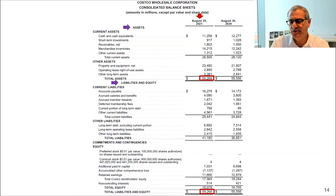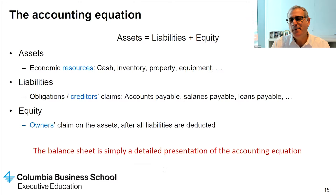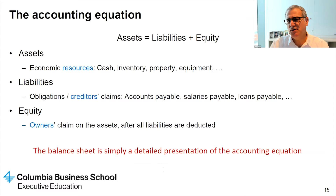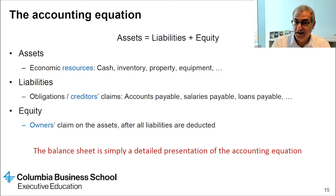Importantly, the balance sheet provides information as of a point in time — in this case for Costco, August 29, 2021. The balance sheet presents the accounting equation: assets on one side, and the claims on the assets — liabilities and equity — on the other side. Equity represents what is left after we subtract all the liabilities from the assets; that's what belongs to the owners.